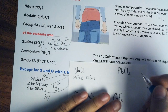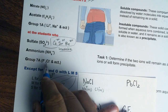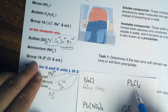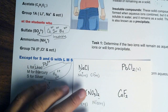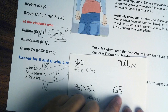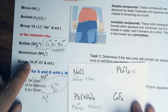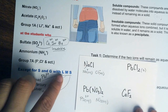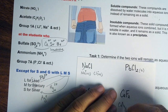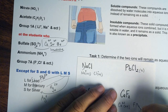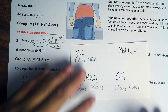Then we have lead chloride. Notice how lead is part of LMS and chlorine is from Group 7A. So although chlorine is always soluble, when it bonds with lead, it will not be soluble — it's going to remain as a solid or as a precipitate. Then we have calcium fluoride. Fluorine is in Group 7A, which is always soluble except with LMS. Calcium is not part of LMS, so this will be dissolved into Ca2+ aqueous and F- aqueous ions.